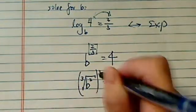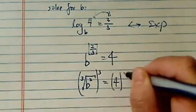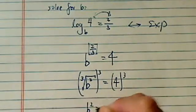From here, I would think it's pretty easy. You're going to cube both sides. So b squared is equal to 4 cubed.